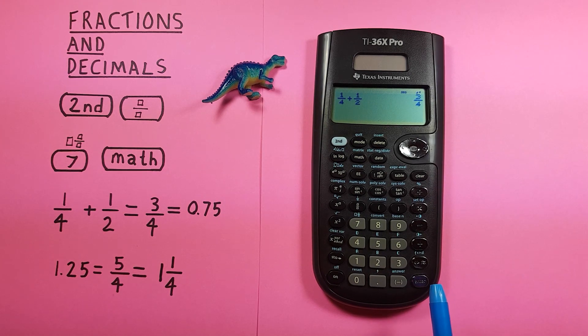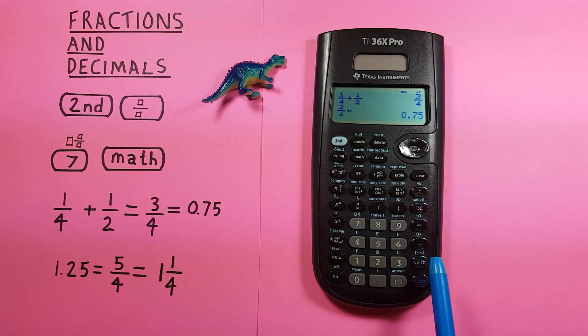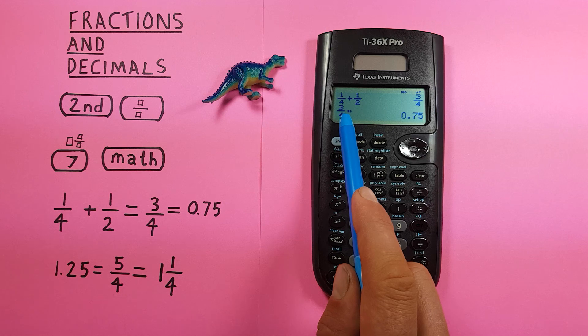What if we want the answer in decimals? Use the key above enter with two arrows going left and right. Press it and it converts 3/4 to 0.75, the decimal equivalent. Press it again and it converts back.